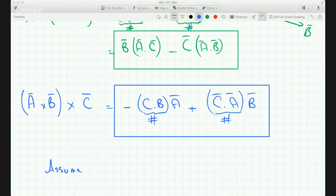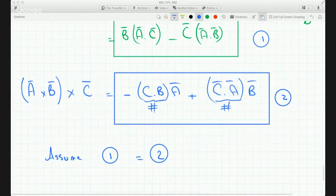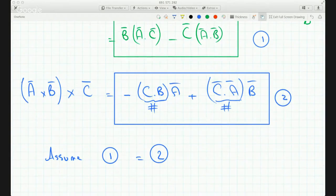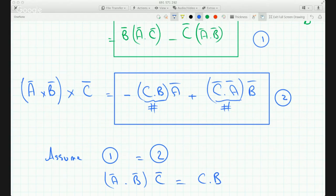Now, assume, let's call this one and let's call this two. Assume one equals two. Well, with that logic, then you will have A dot B times C, times vector C, has to equal C dot B times vector A.